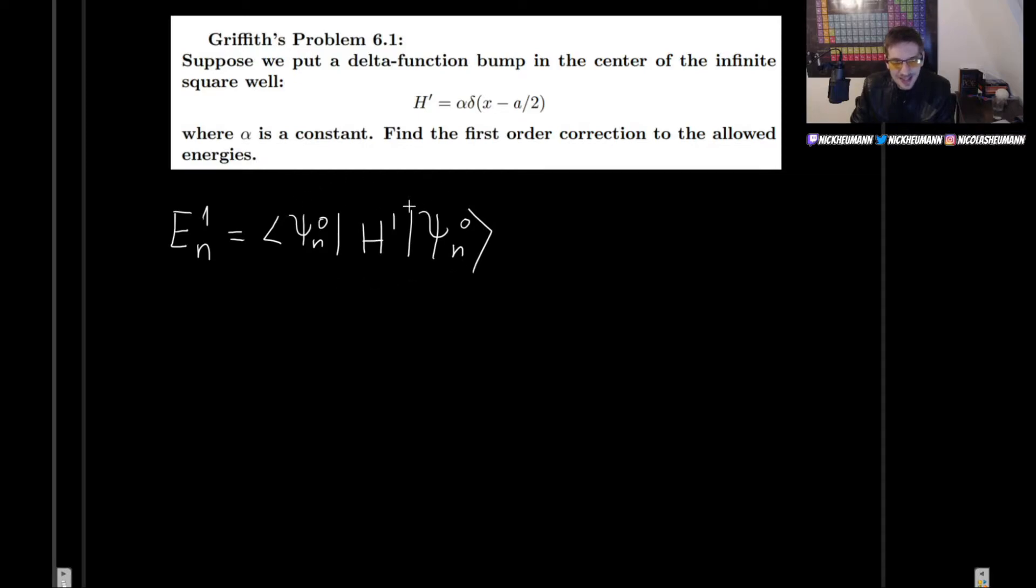So what exactly is each one of these things? Well, the H prime is exactly what is up here. And these wave functions are the wave functions that we found in the previous course when we were solving the infinite square well. So they are square root of 2 over a times sine of n pi over a times x.